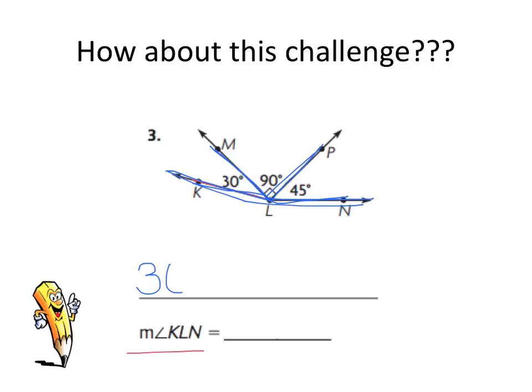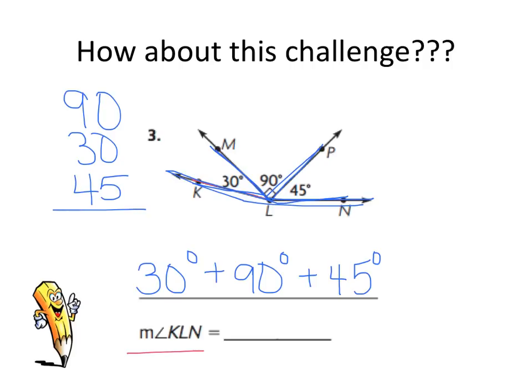So I could put 30 degrees plus 90 degrees plus 45 degrees. I'm going to add those vertically as well because I want to watch my regrouping. I can see 0 plus 0 plus 5 is 5, 9 plus 3 is 12, plus 4 is 16. So now I know that this is 165 degrees.